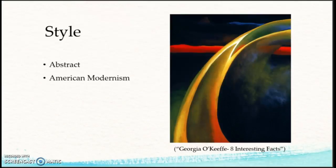O'Keeffe set aside the realist style she was taught in art school and showed others the world of abstractions. She did not paint and draw things exactly as they appeared, but instead used elements of art like lines, shapes, colors, and contrast to convey meaning through her work, like in this piece, Red and Orange Streak. She is also known as the mother of American modernism. With her unique representation of flowers, dramatic portrayals of cityscapes, scenes of New Mexico, and images of bones against desert skies, she contributed to American modernism.